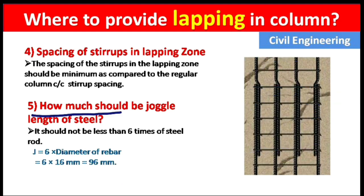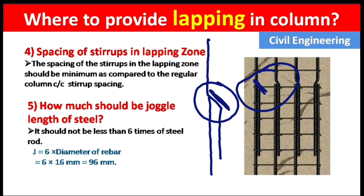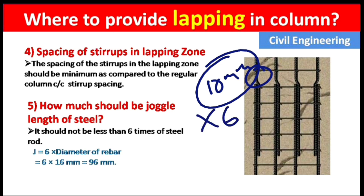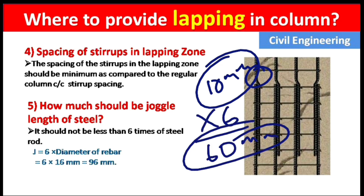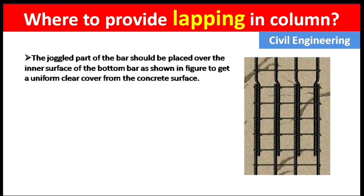The next point is the crank (juggle) length of the steel. The crank length is the inclined/bent part of the bar — where one bar bends in one direction and another bends in the opposite direction. This inclined length is known as the crank length and it should not be less than 6 times the bar diameter. For a 10 mm rod, that is 60 mm.